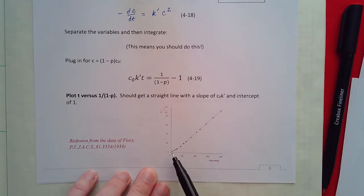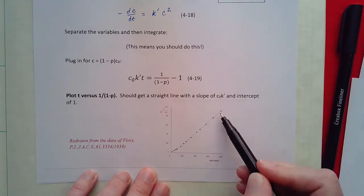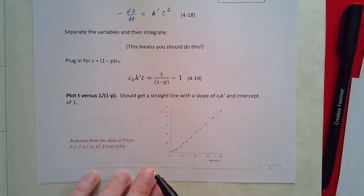And that's because our assumption that reactivity is independent of chain length is great, it's excellent except for with monomers and dimers and so we see that more down here.